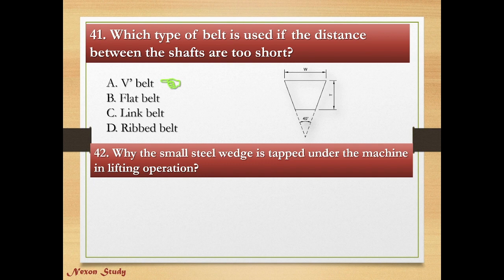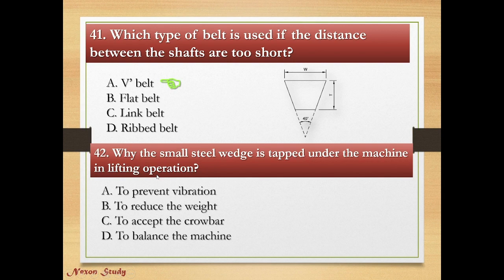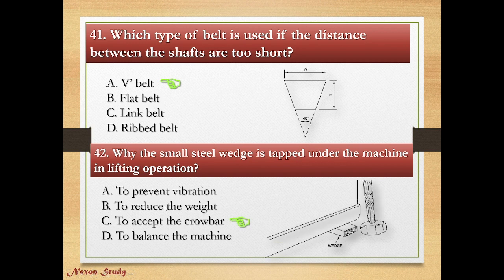Question: Why is a small steel wedge tapped under the machine in a lifting operation? Options: to prevent vibration, to reduce the weight, to accept the crowbar, to balance the machine. Right answer is to accept the crowbar. This is the steel wedge.